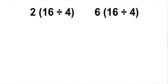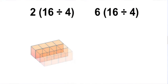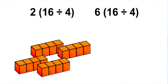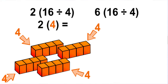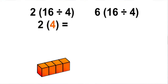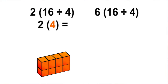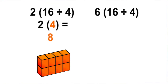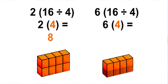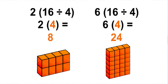Start by modeling the 16 divided by 4. Place 16 cubes and divide them into 4 groups — each group contains 4 cubes. The first expression multiplies the 16 divided by 4 by 2, so place another row of 4 cubes above the first row. The second expression multiplies the 16 divided by 4 by 6, so place 5 more rows of 4 above the first row for a total of 6 rows.